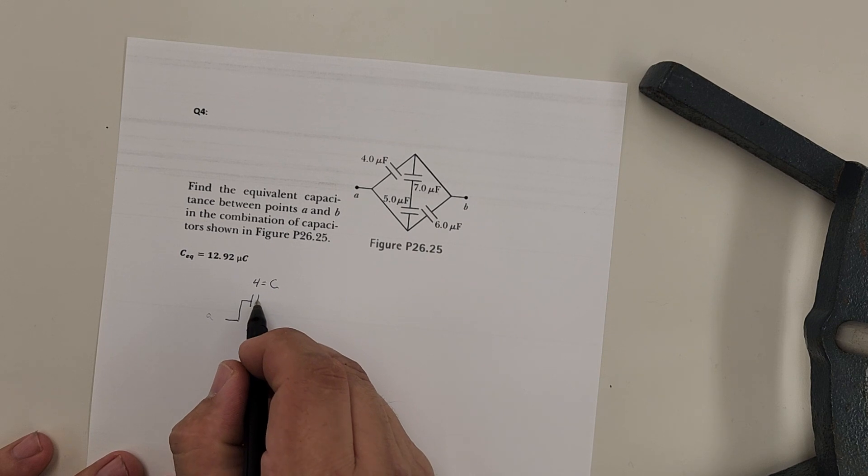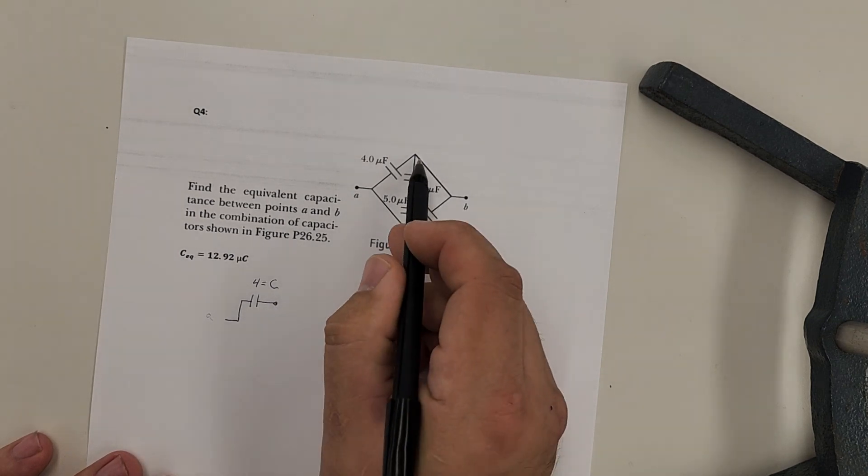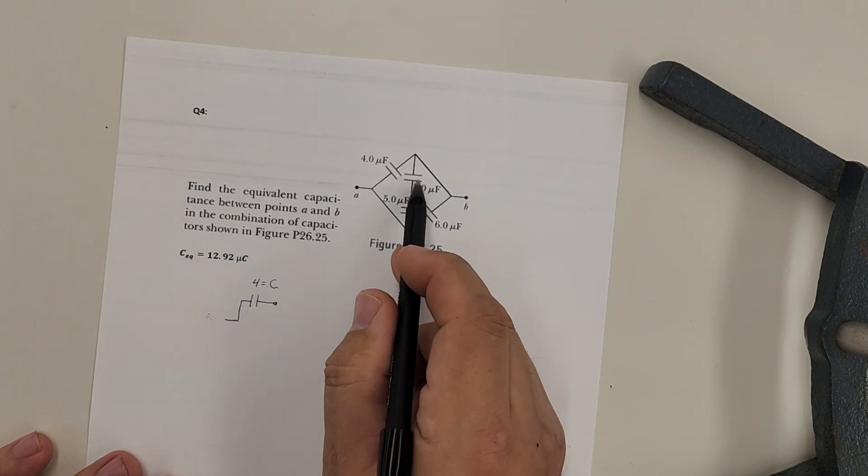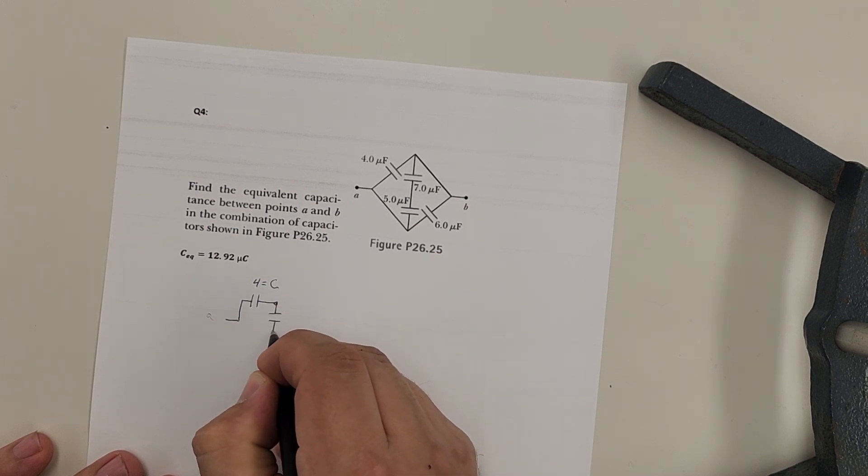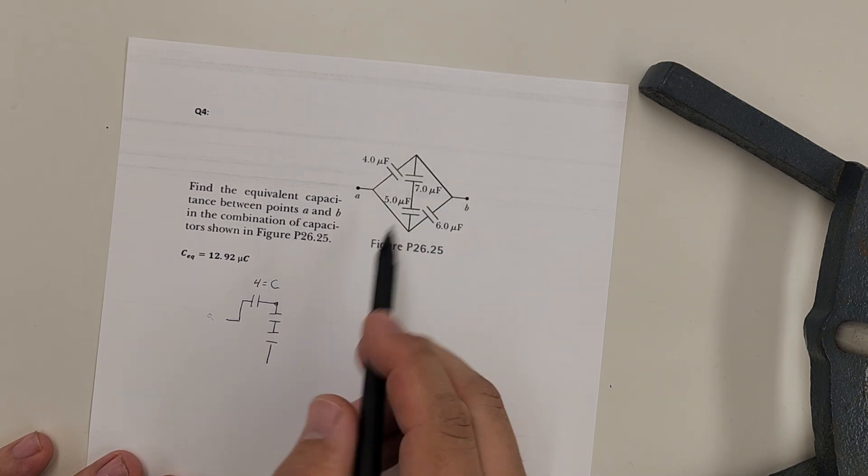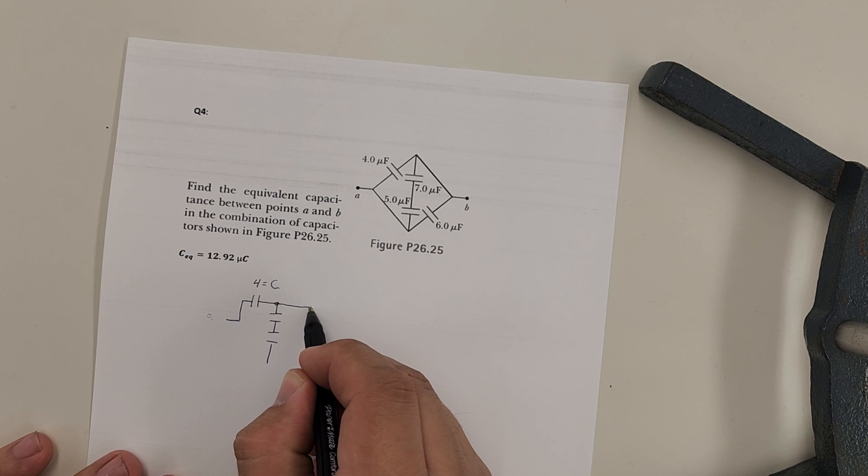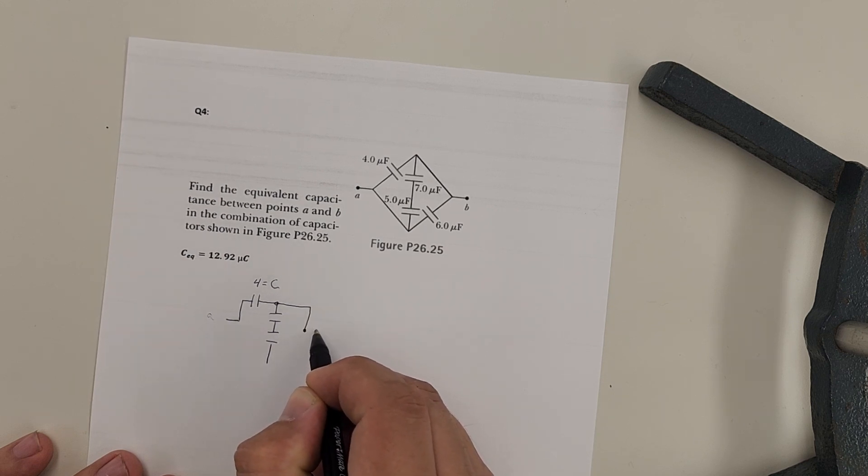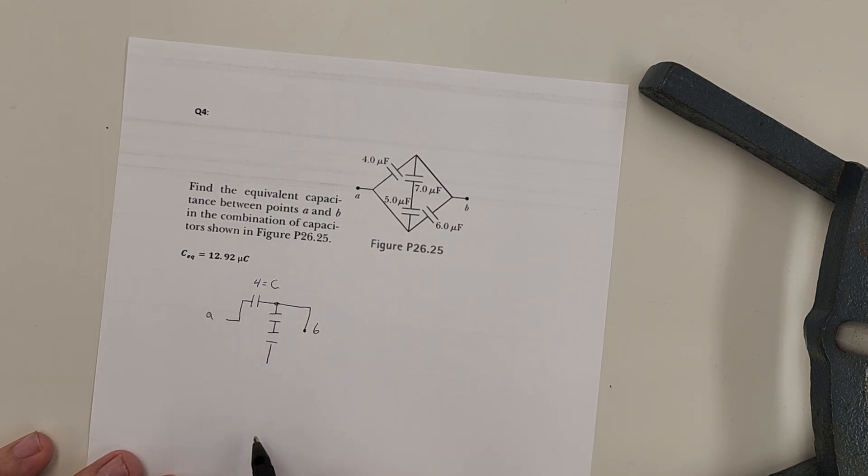Then it comes to a junction point, which is here, and then there are two capacitors in series from that point, so I'm going to draw those in. The rest of this simply connects over to B, so I have my A and my B points.